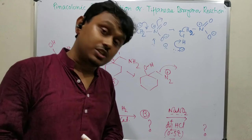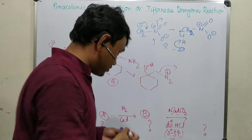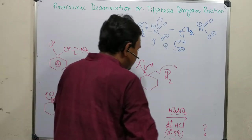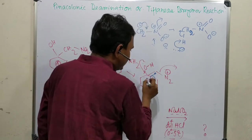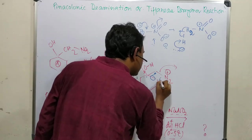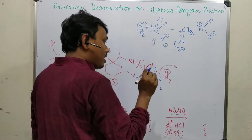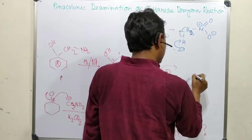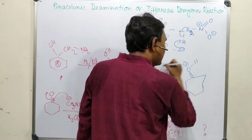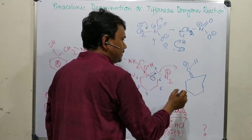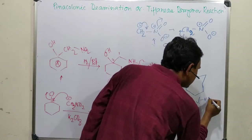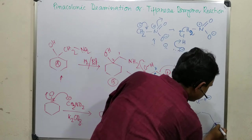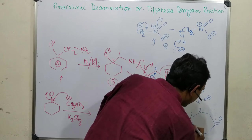Aliphatic diazonium salts are not stable — unlike aromatic diazonium salts which are stabilized by conjugation — so aliphatic ones readily eliminate nitrogen. With slight heat, N₂ leaves, the oxygen pushes its electrons, and one of the alkyl groups migrates. Previously the ring was six carbons; after migration of one carbon, it becomes seven carbons. Drawing it out: the C=O⁺ forms, then after loss of H⁺, a seven-membered ring ketone is produced.